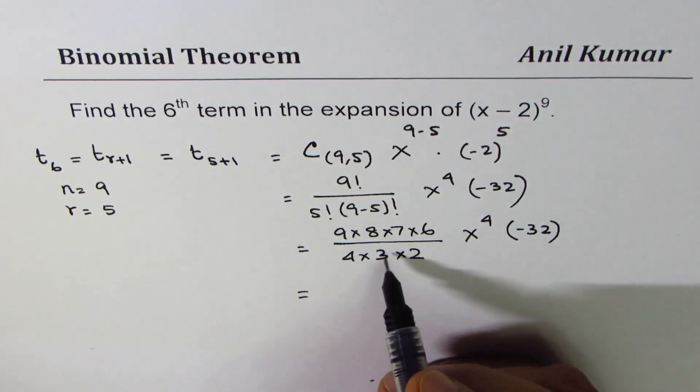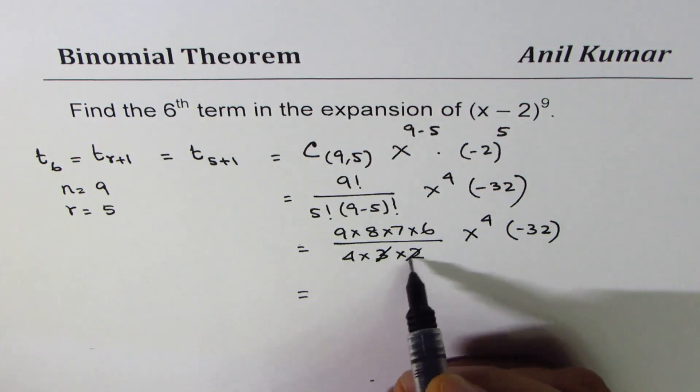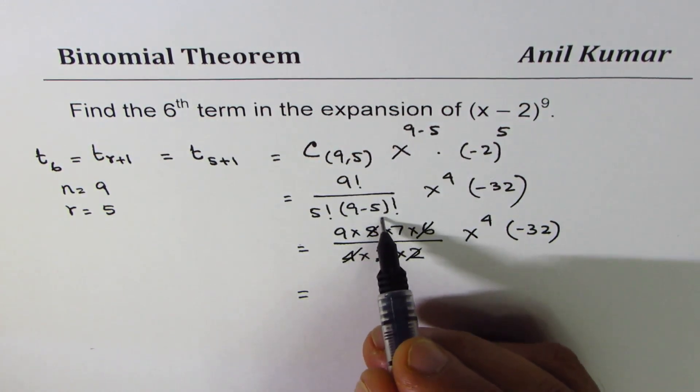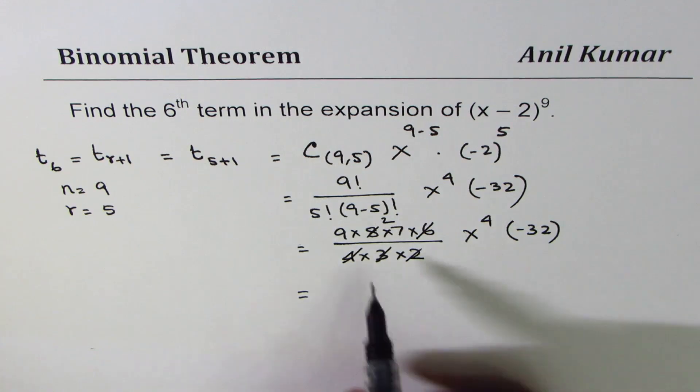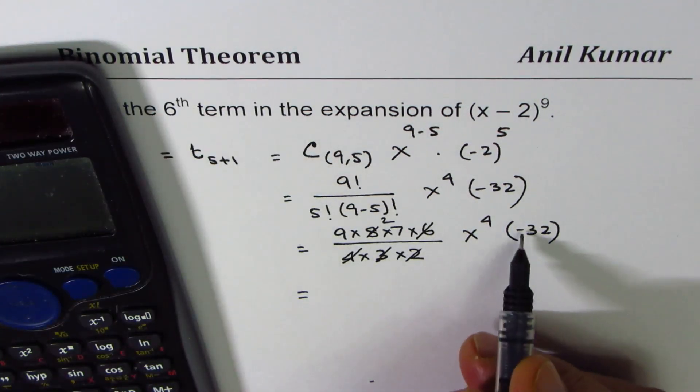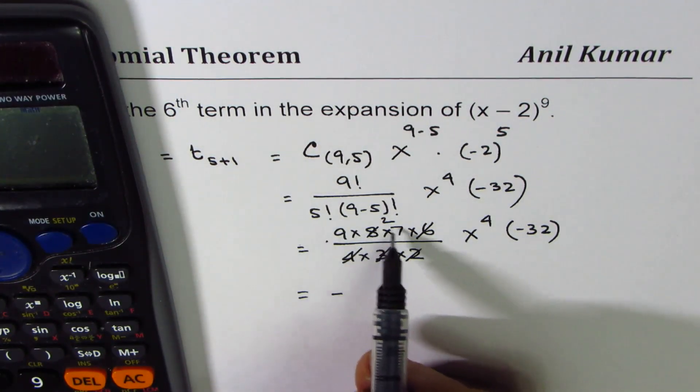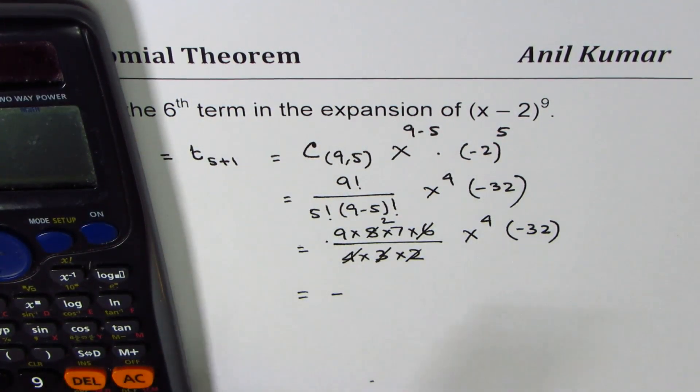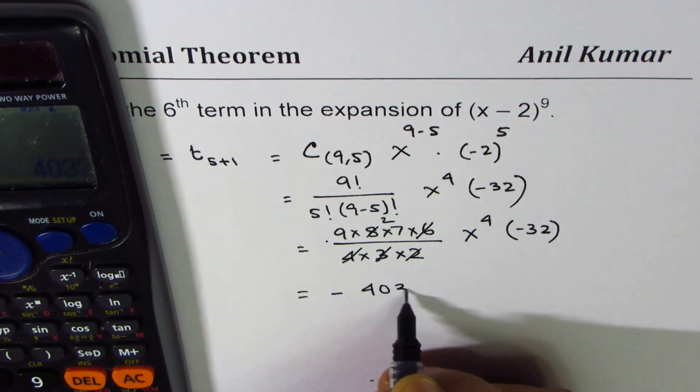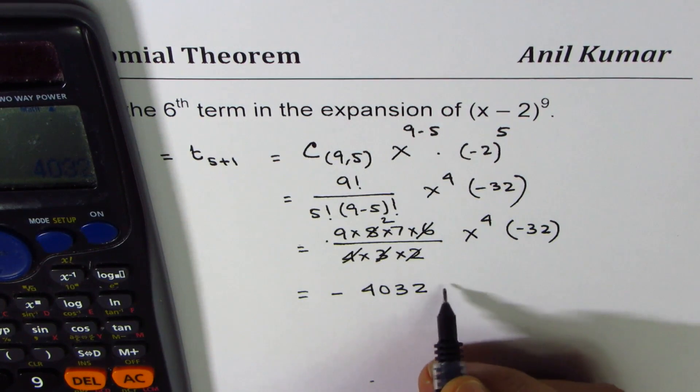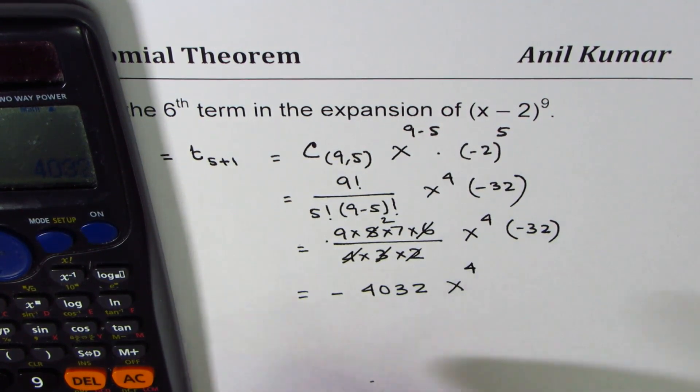So this we can calculate 3 times 2 goes 4 goes 2 times and so we have 9 times 14. This is a negative number. 9 times 14, 9 times 2 times 7 times 32 equals to 4032, negative 4032 x to the power of 4.